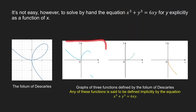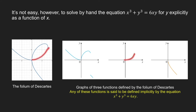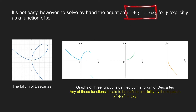We can identify three separate pieces of the folium of Descartes, each of which is a graph of a function by the vertical line test. Any of these three functions is said to be defined implicitly by the equation x cubed plus y cubed equal to 6xy. The question is: is it possible to find the derivative of y with respect to x without solving y in terms of x? Fortunately, the answer is yes, and the method we use is called implicit differentiation.